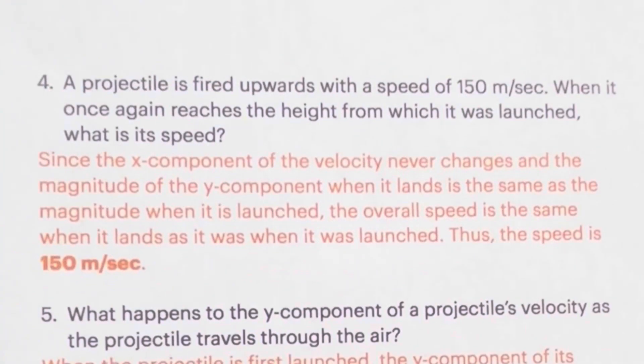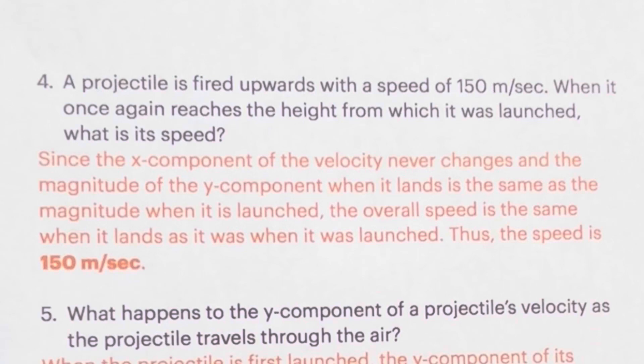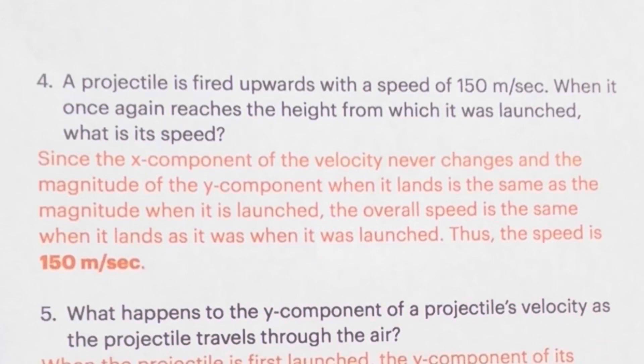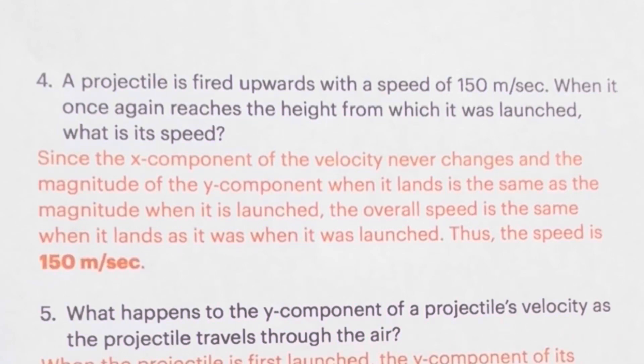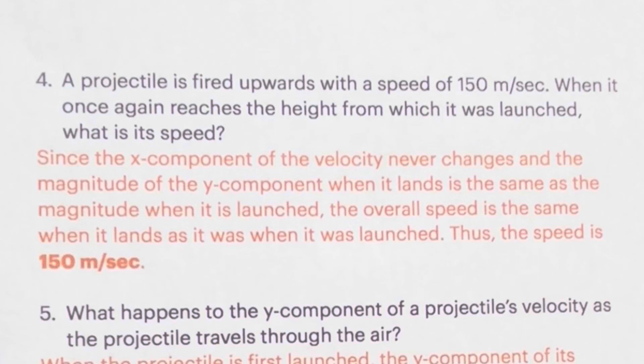A projectile is fired upwards with a speed of 150 meters per second. When it once again reaches the height from which it was launched, what is its speed? Since the X component of the velocity never changes, and the magnitude of the Y component when it lands is the same as the magnitude when it was launched, the overall speed is the same when it lands as it was when it launched. Thus, the speed is 150 meters per second.